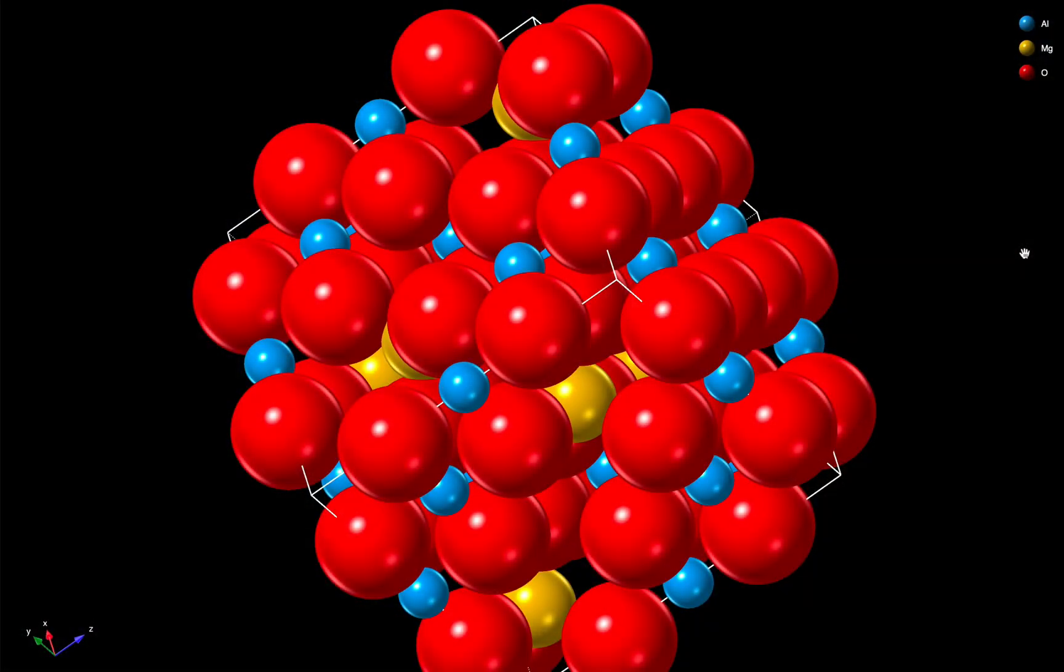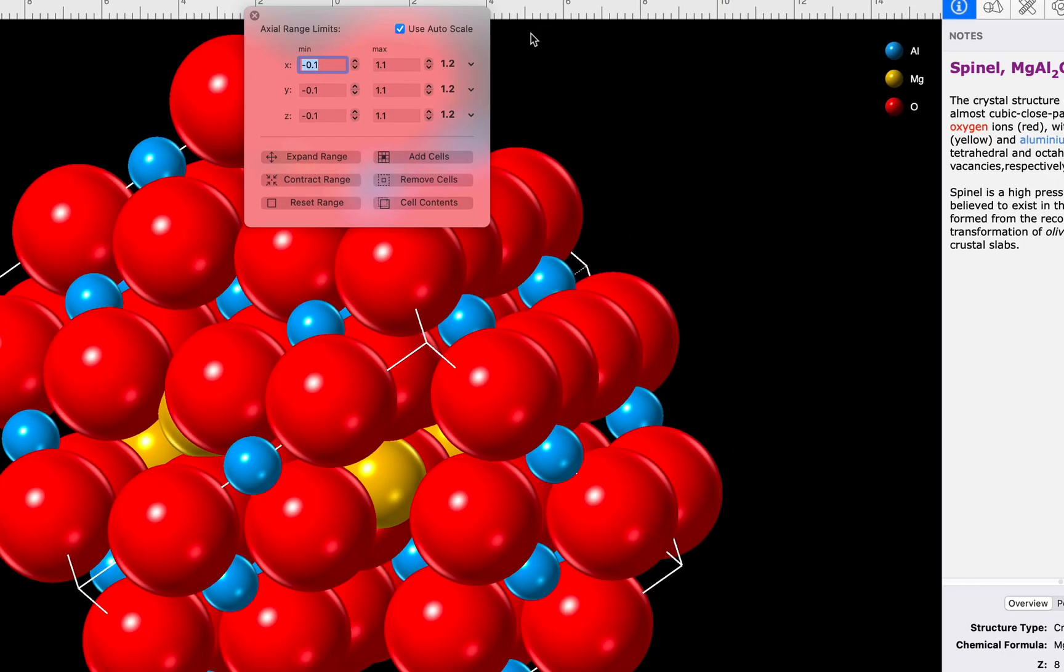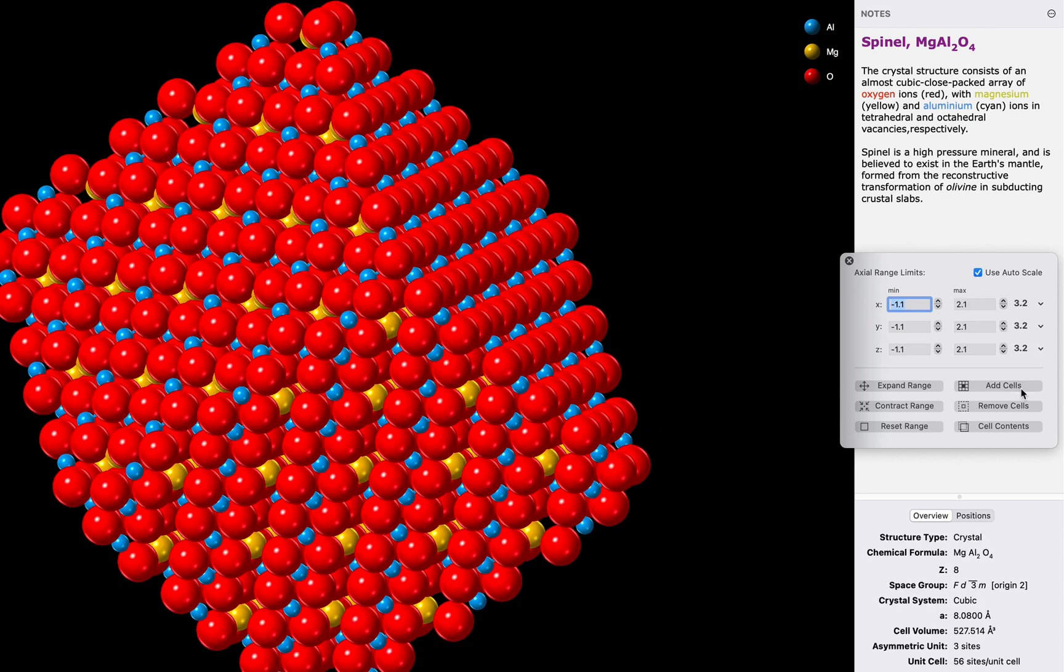The easiest way to visualize a surface is simply to slice a large block of crystal to reveal the surface structure. We'll start by using the range popover and we're going to create a large block of atoms by clicking the add cells button a few times.